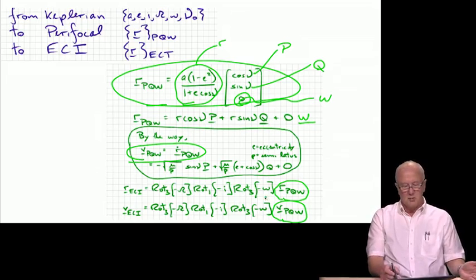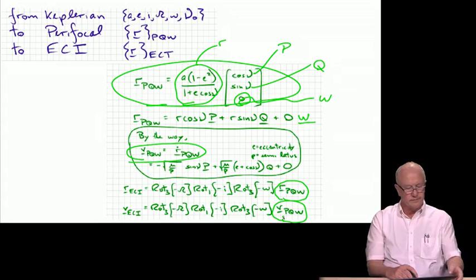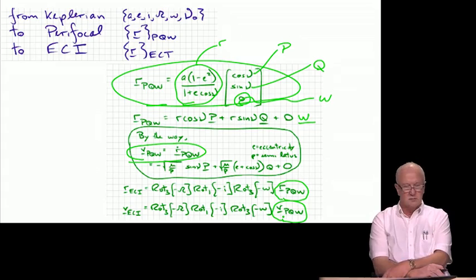And they do nothing other than inculcate those rotations I showed you on the last view graph. Remember, we brought P down into the equatorial plane with a rotation of negative lowercase omega. We brought P and Q into the equatorial plane by flattening out the inclination, a rotation of negative i. And then we brought P into alignment with the vernal equinox, a rotation of negative capital omega. So, that's it. That's what we've done. Same rotations apply to V.